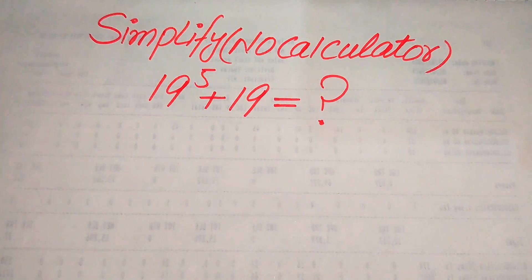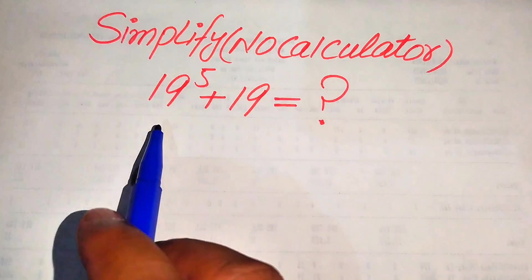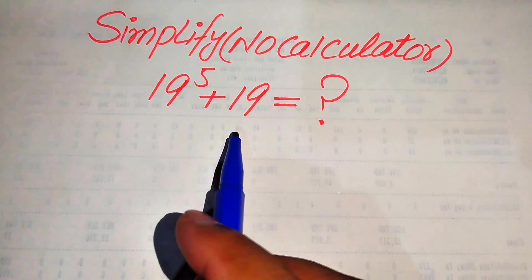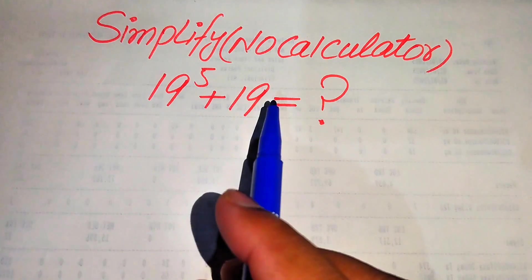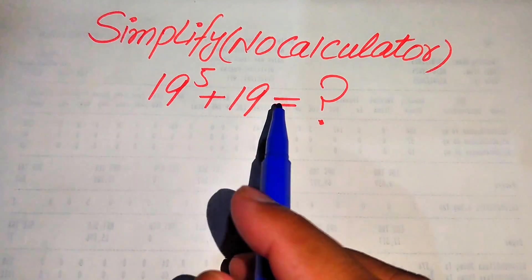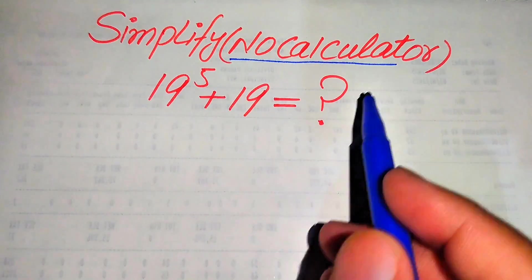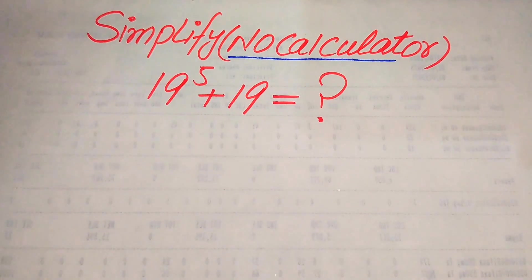Hello everyone, today I want to show you how to simplify this algebraic expression: 19 to the power of 5 plus 19. We will write this algebraic expression into simplified form. Remember, a calculator is not allowed in this problem, which means we will show all of the working on this paper.